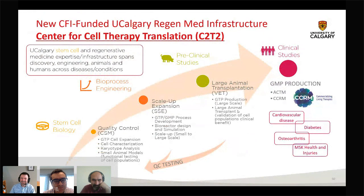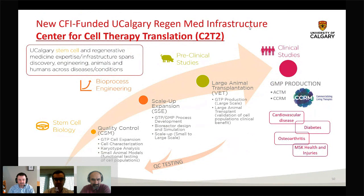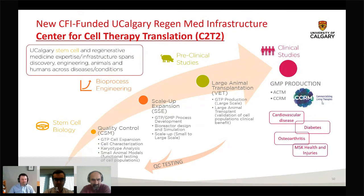We've just received CFI funding for a Centre for Cell Therapy Translation. We're building a large animal regenerative medicine facility at the University of Calgary's Faculty of Veterinary Medicine Spy Hill campus, with a bioreactor suite for expanding cells prior to large animal transplantation studies — including pig work. We've also invested in infrastructure for rigorous quality control of cells going in and out. The U of C has recently partnered with CCRM to rapidly translate discoveries into companies, licensing agreements, or other mechanisms. We're very excited to be moving in this translation direction.